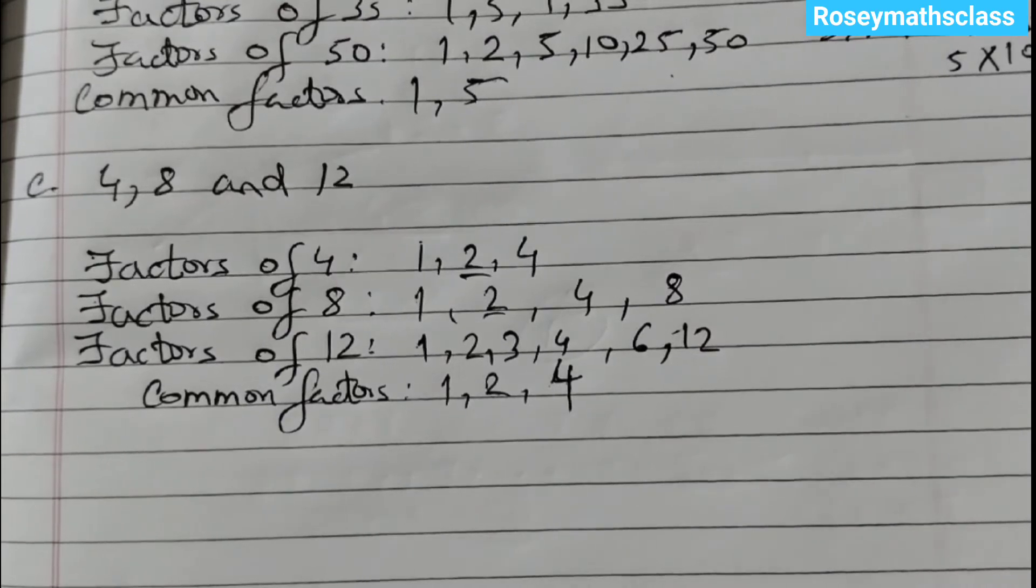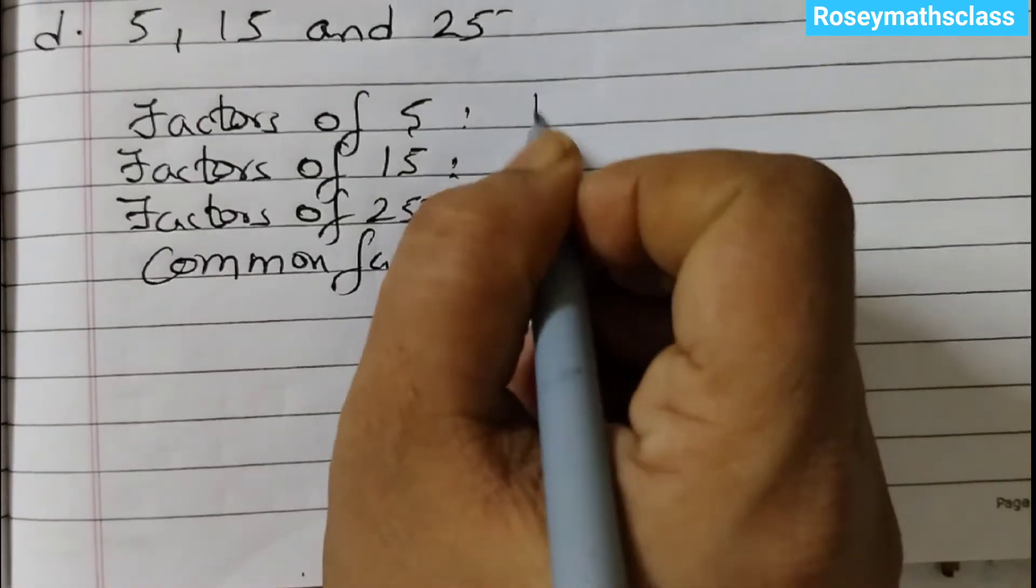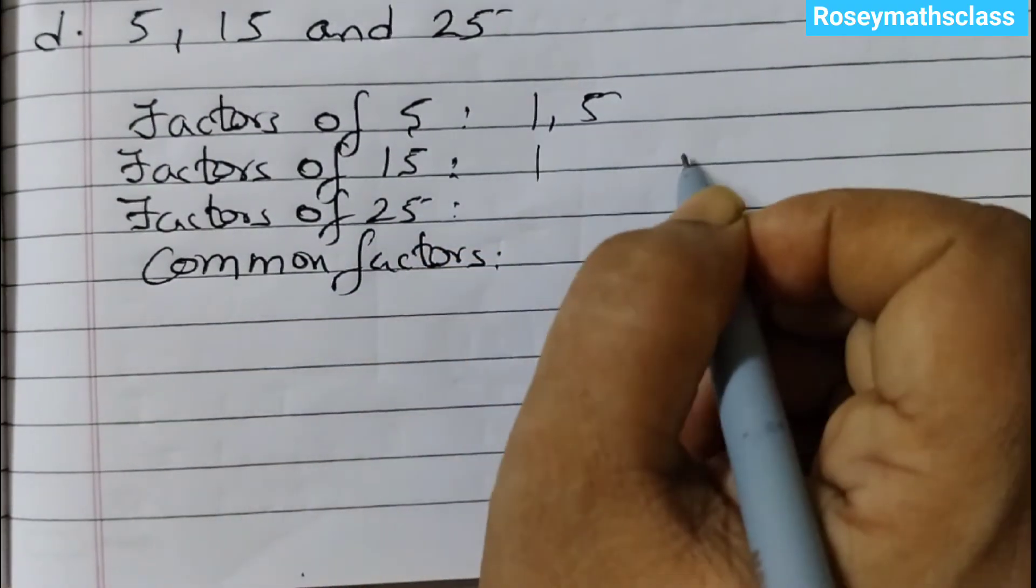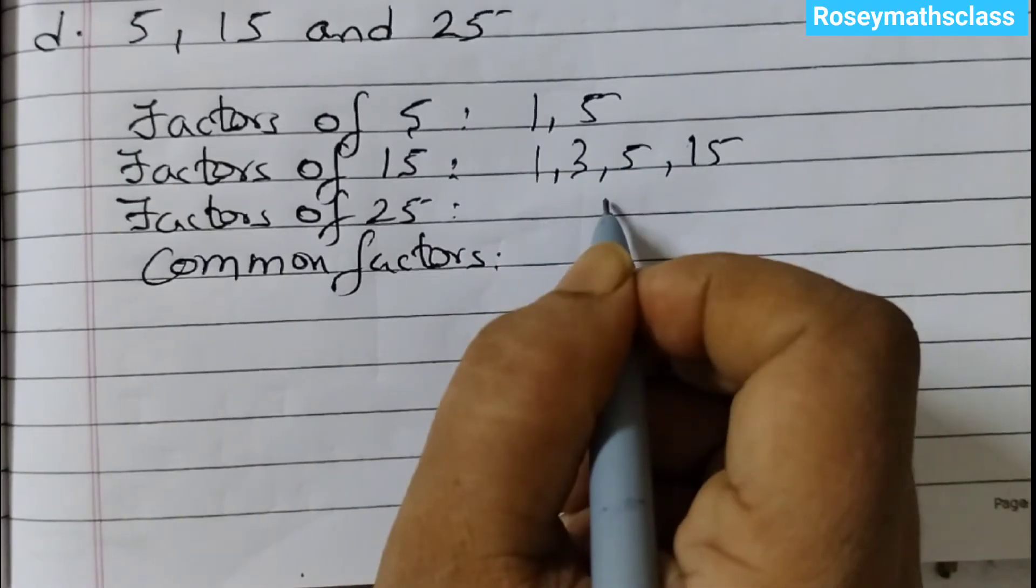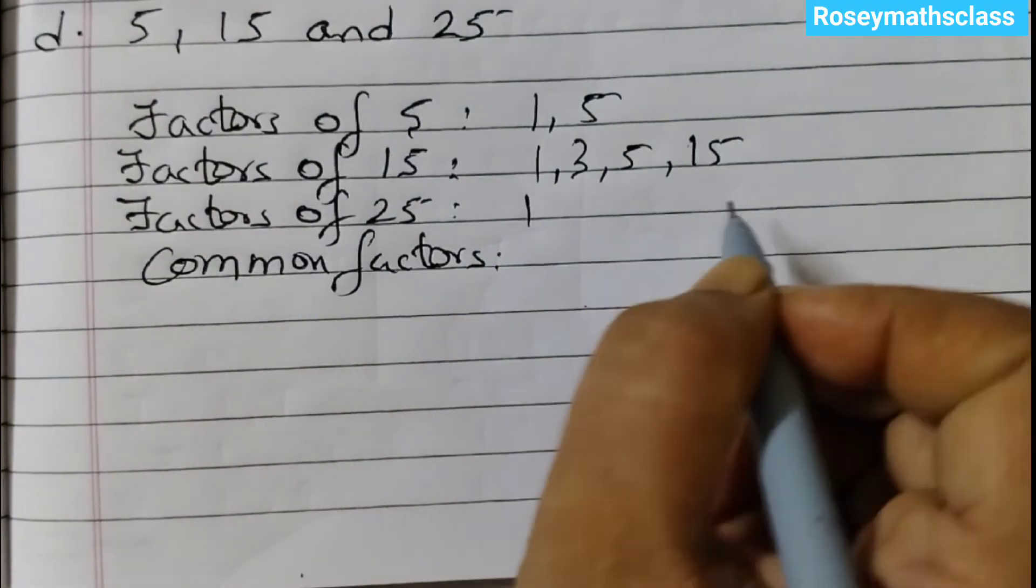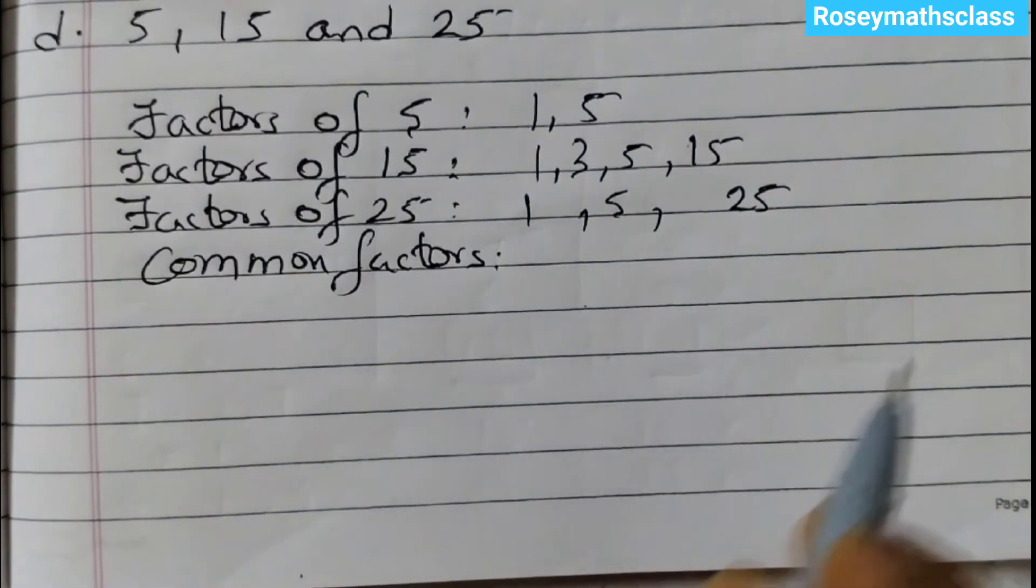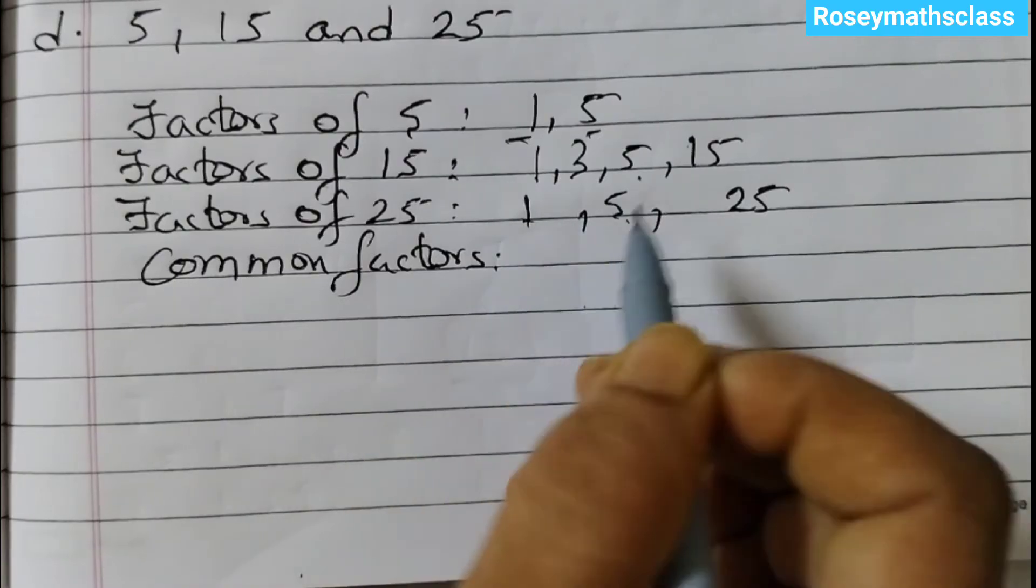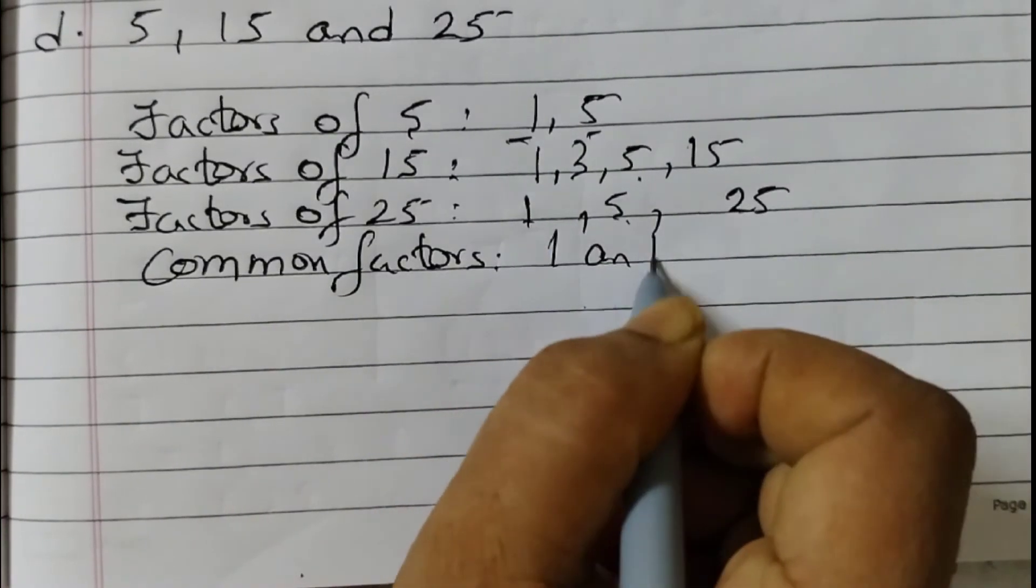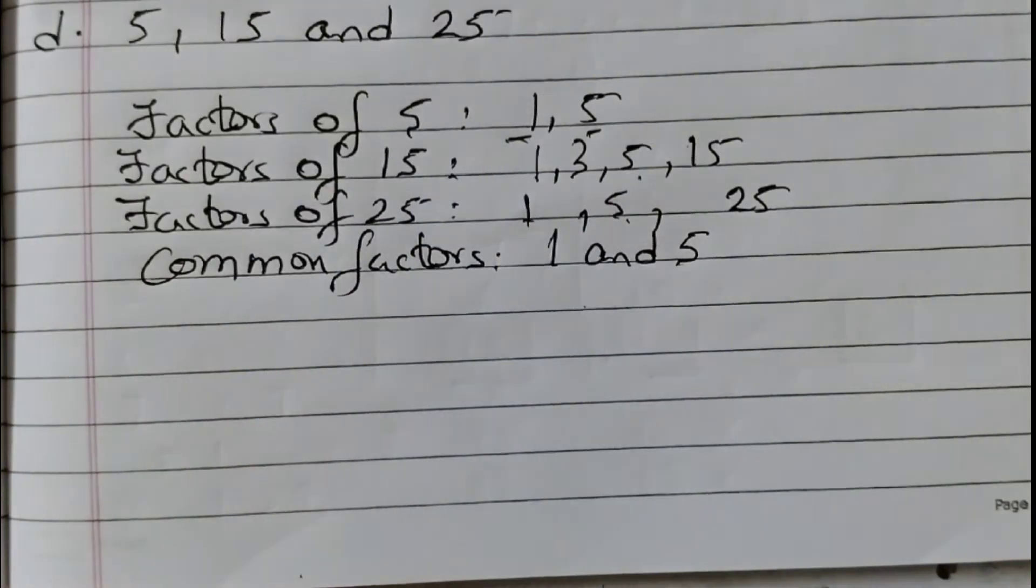The last one is 5, 15 and 25. Factors of 5: 1 and 5. Factors of 15: 1 into 15, 3 into 5. So 1, 3, 5, 15. Factors of 25: 1 into 25 and 5 into 5. So we will write one time, 1, 5 and 25 are the factors. Common factors are 1 and 5. So 1 and 5 are the common factors of 5, 15 and 25.